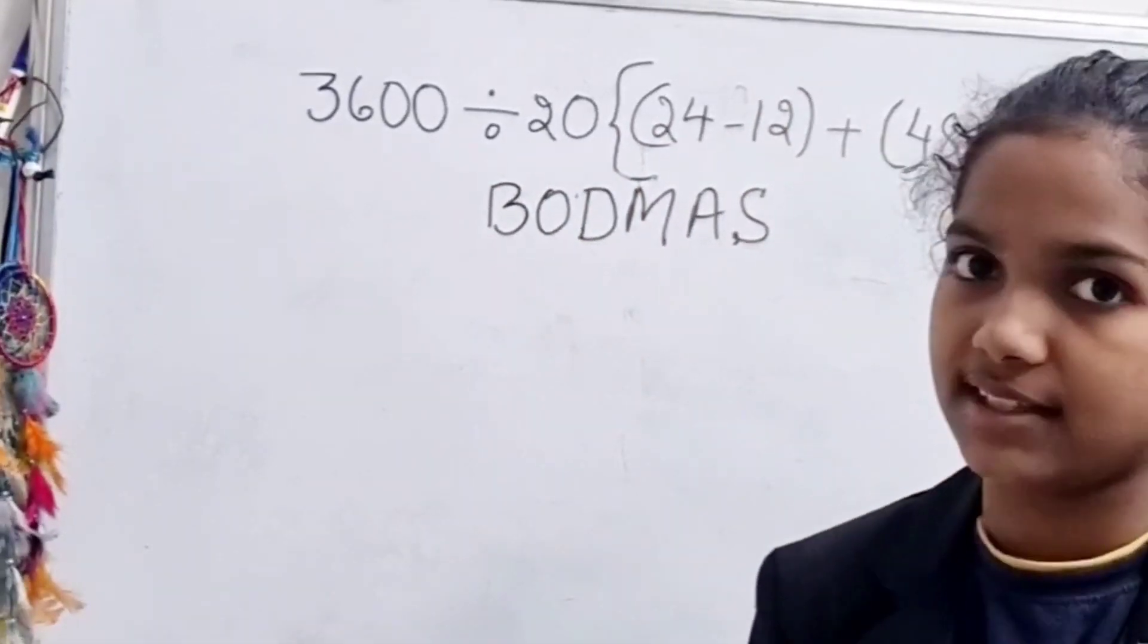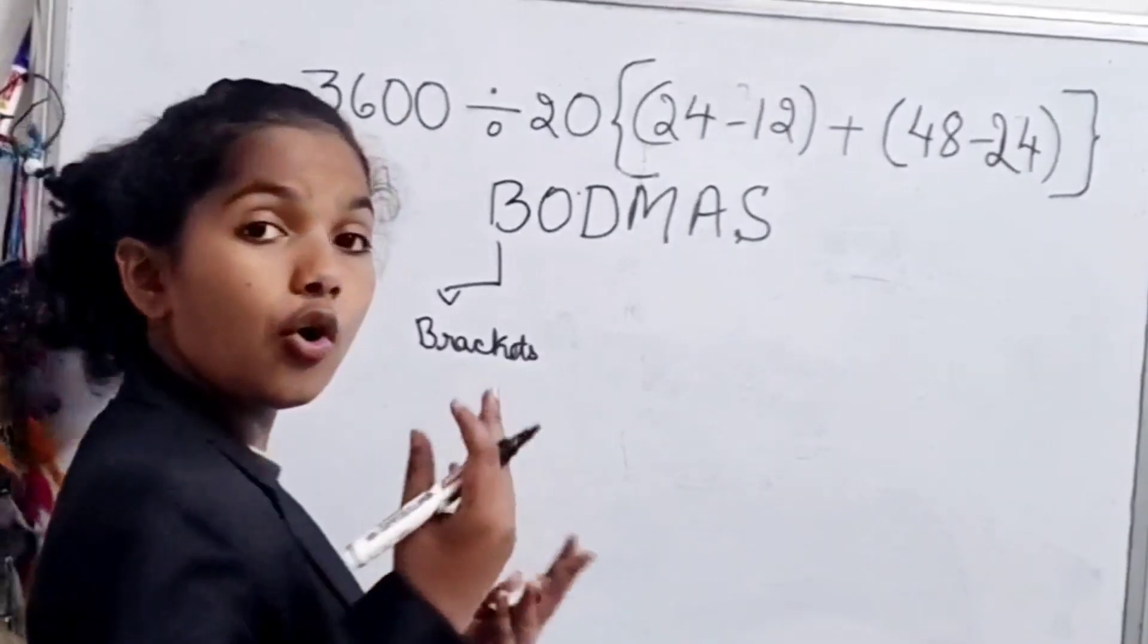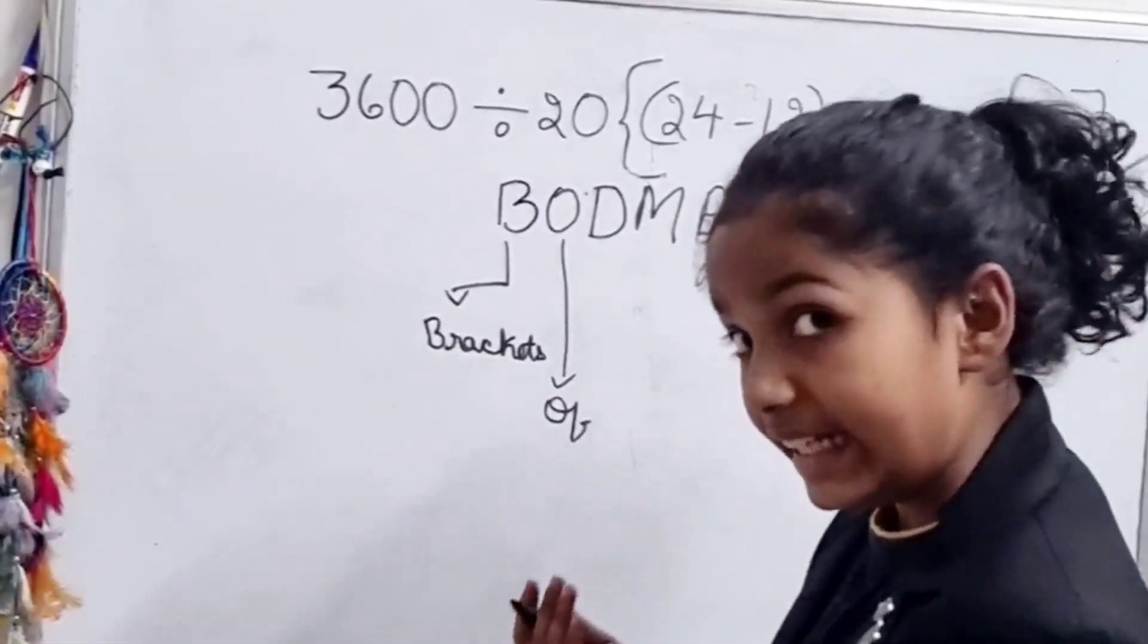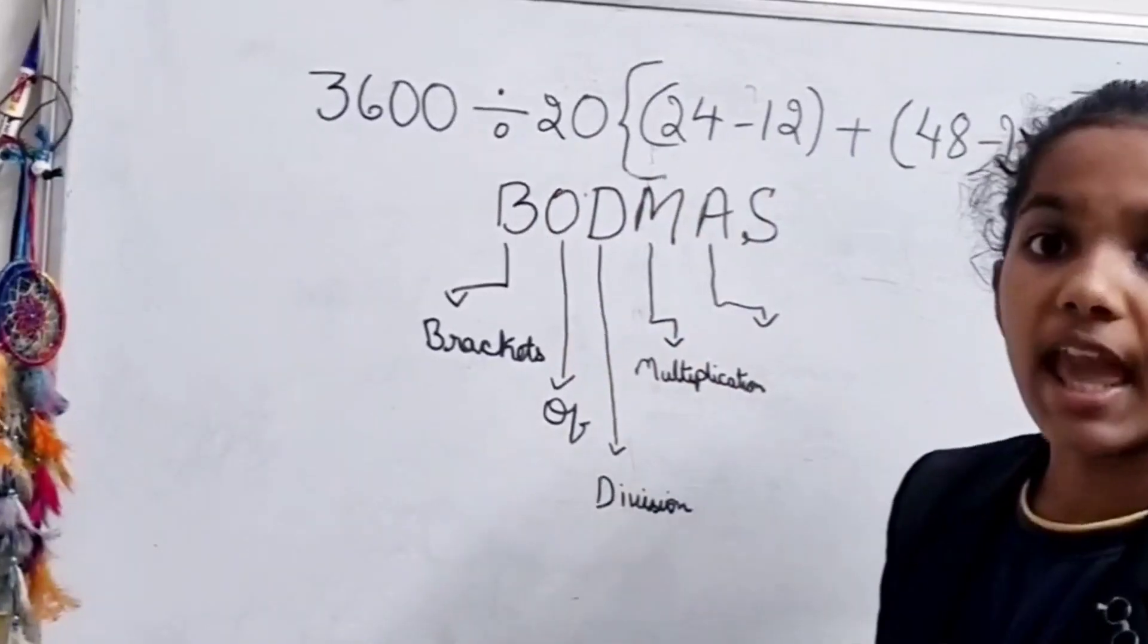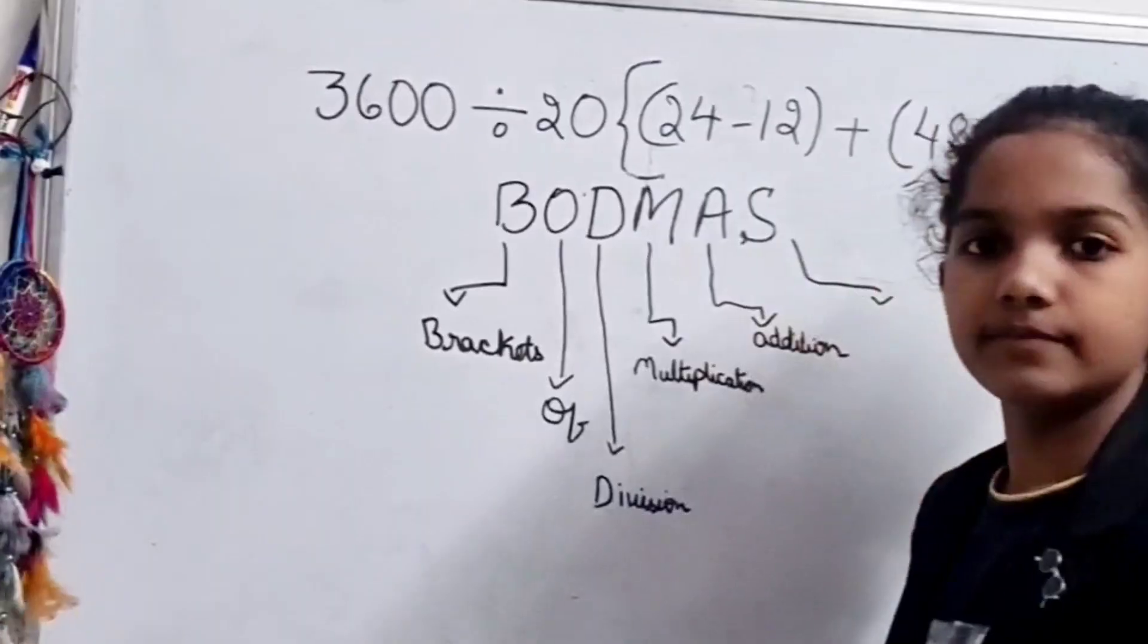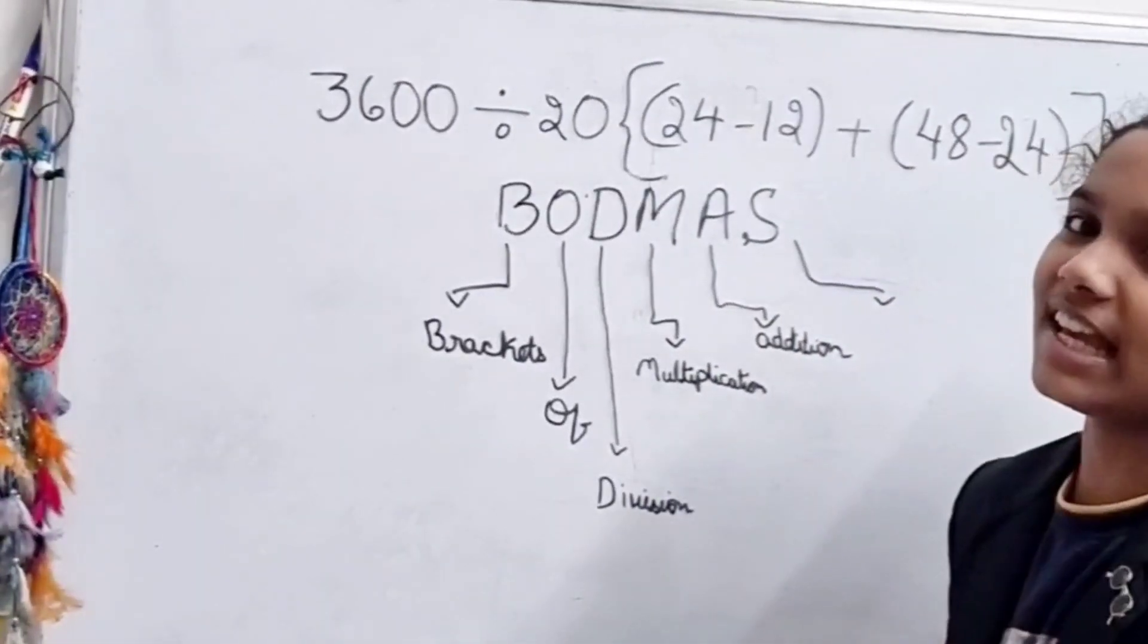B equals brackets. So let me write that down. O is of, D is division, M is multiplication, A is addition, and S is, that's right, subtraction.